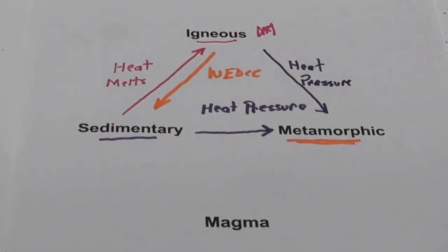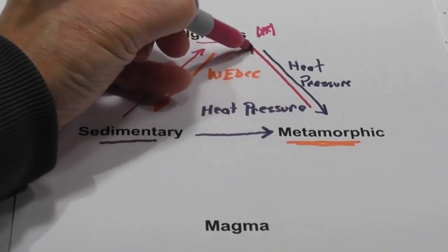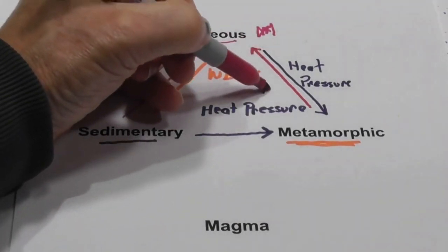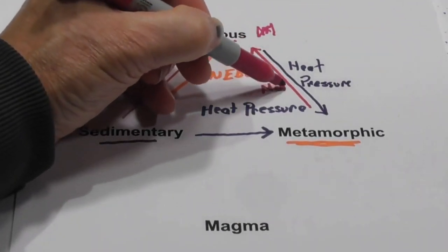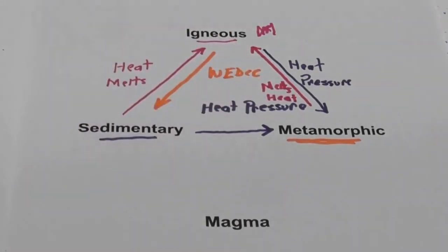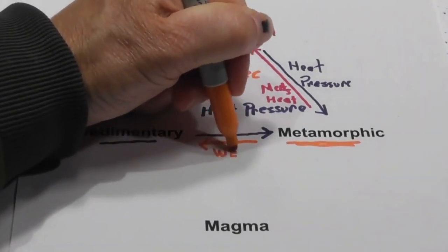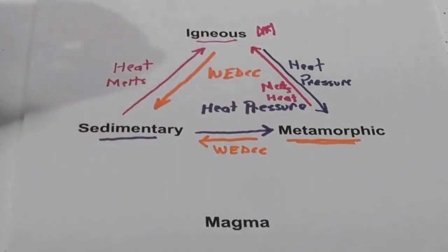Now, a metamorphic rock can become an igneous rock if it is exposed to so much heat that it melts. So I'm just going to write melts from heat. Okay, so what have I missed here? How about a metamorphic becoming a sedimentary? Okay, and that is WEDCCC.